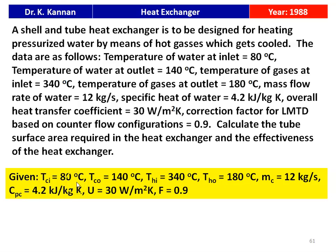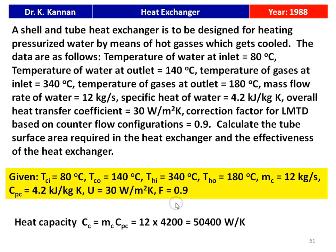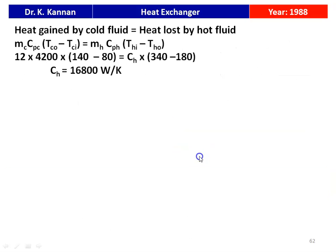Given: TCI = 80°C, TCO = 140°C, THI = 340°C, THO = 180°C, MC = 12 kg/s, CpC = 4.2 kJ/kg·K, U = 30 W/m²K, correction factor F = 0.9. Heat capacity CC = MC × CpC = 12 × 4200 = 50,400 W/K. Using heat gain by cold fluid equals heat loss by hot fluid, we calculate the heat capacity of the hot fluid: CH = 16,800 W/K.